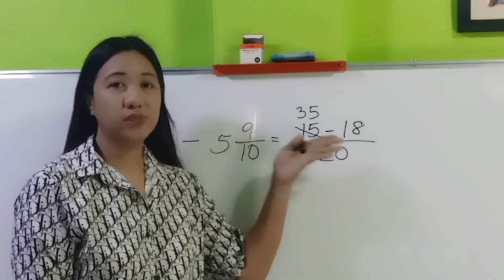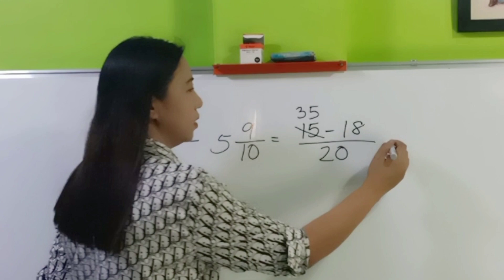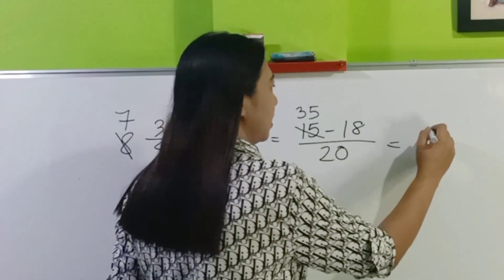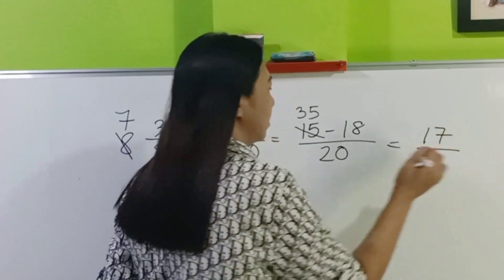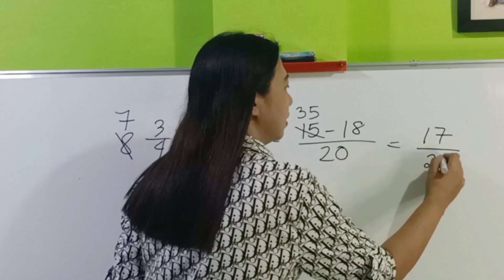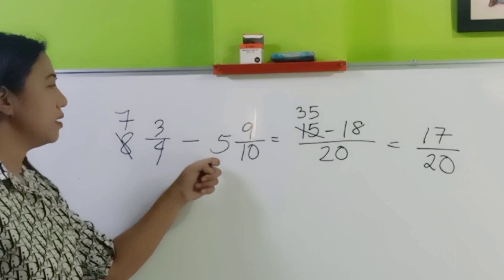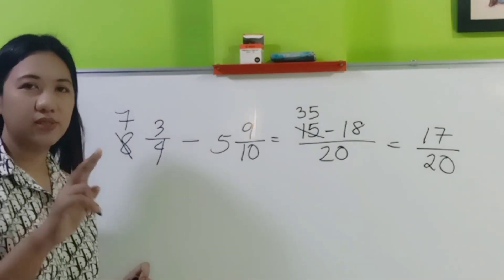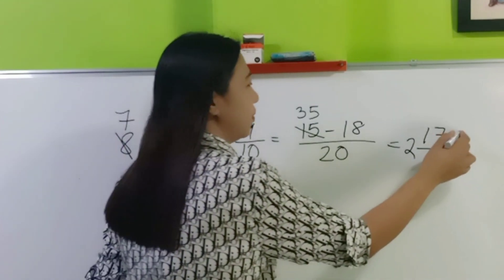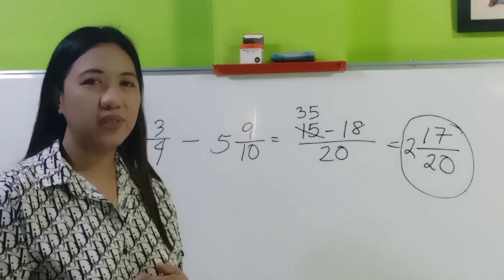Can we now subtract without getting a negative number? Yes. So 35 minus 18 is 17. And then copy the denominator. Now, subtract the whole numbers. 7 minus 5 is 2. Can you still simplify? Not anymore. So we have now 2 and 17 over 20.